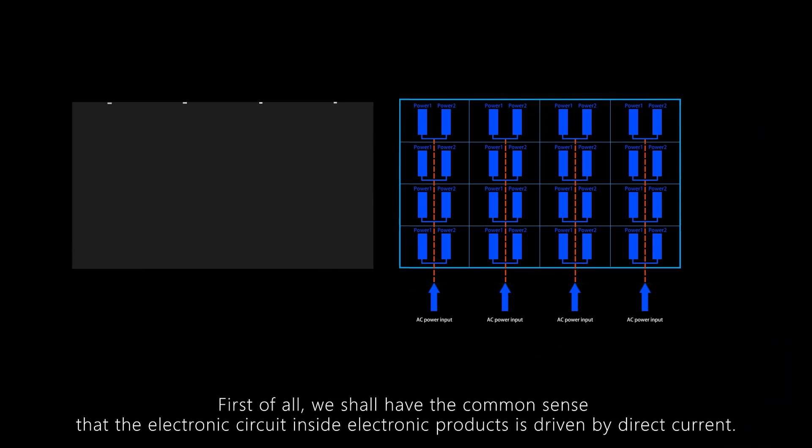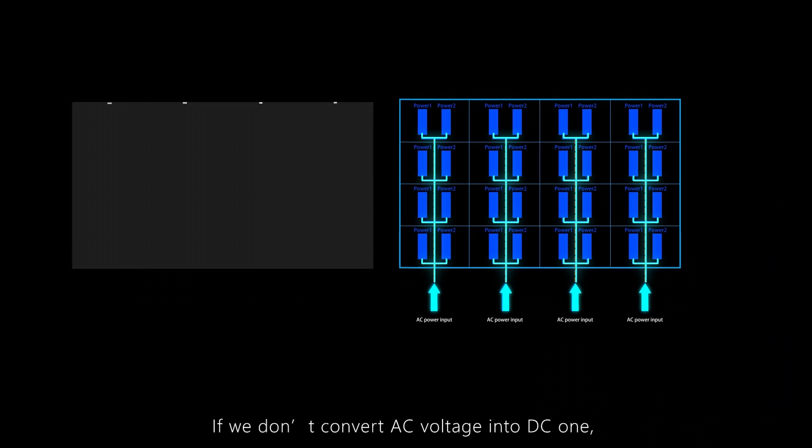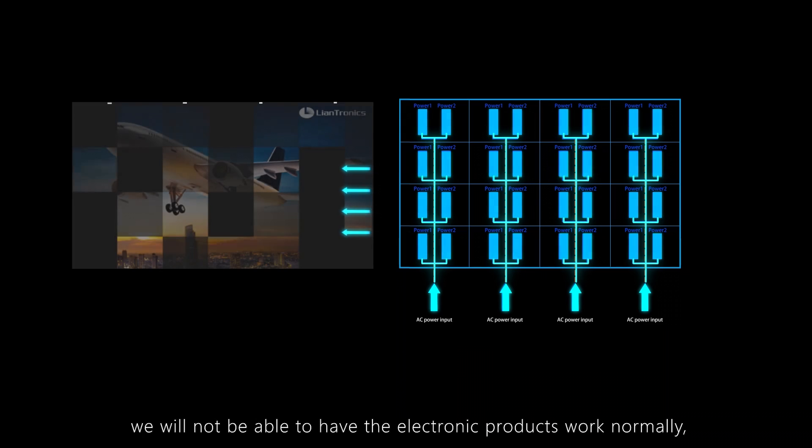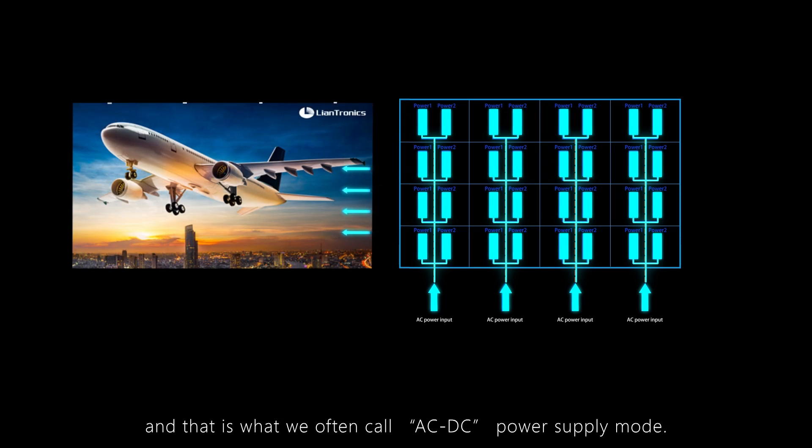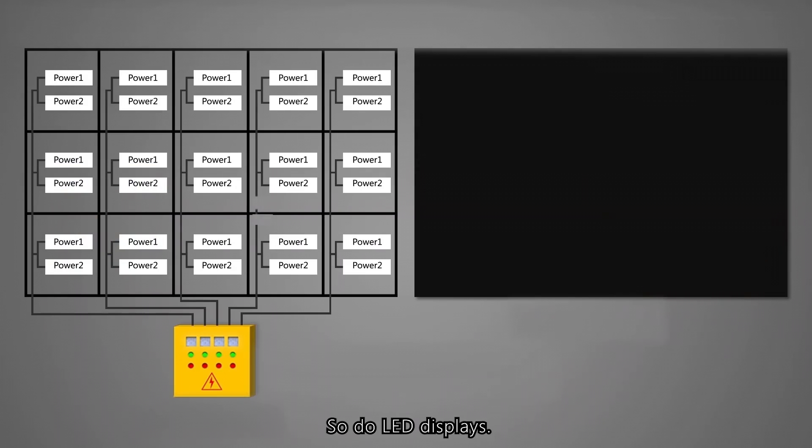First of all, we shall have the common sense that the electronic circuits inside electronic products are driven by direct current. If we don't convert AC voltage into DC one, we will not be able to have the electronic products work normally, and that is what we often call AC to DC power supply mode. So do LED displays.